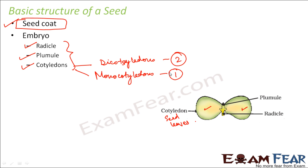Looking at the structure of a dicot seed and a monocot seed, they are quite different from each other. However, at this stage we will not go into the detail of their structures, as you will learn about them later in your higher classes.